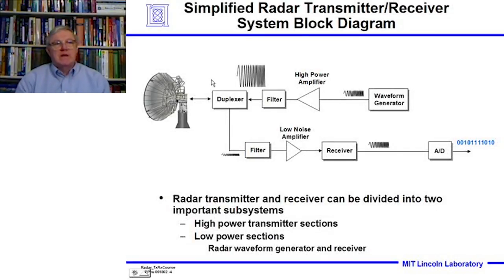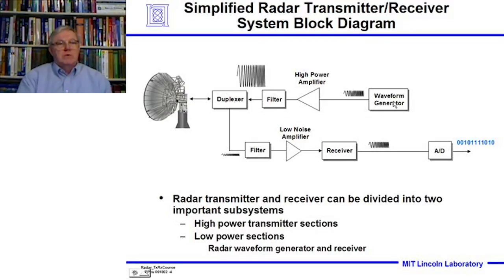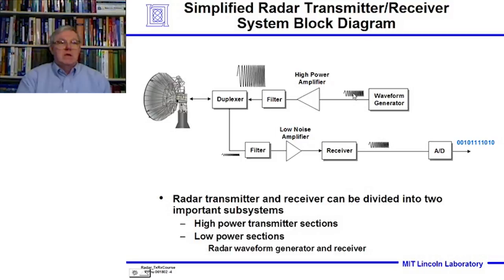Here's a simplified block diagram of the transmitter, just so you can see it big picture. You see that we've got a waveform generator, where we generate a small signal at usually a lower frequency. Then we finally transmit, converted up to a higher frequency. But before we do that, we amplify the signal, filter it, and then go out through the duplexer — a switch.